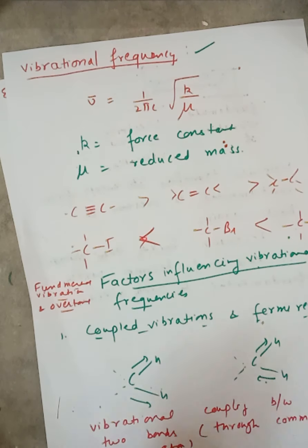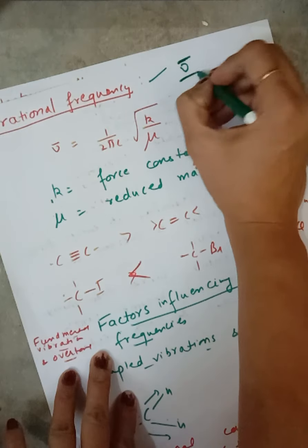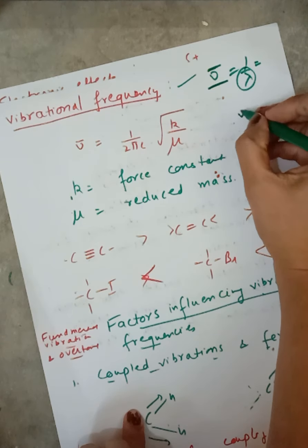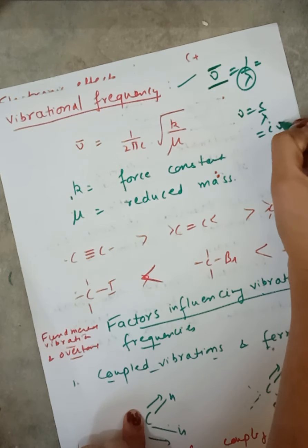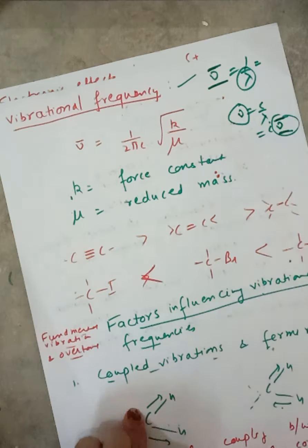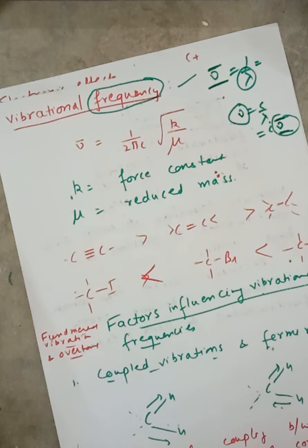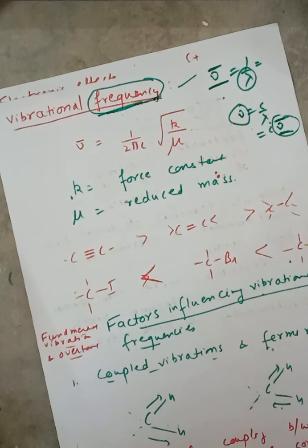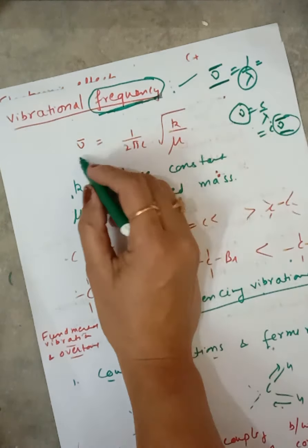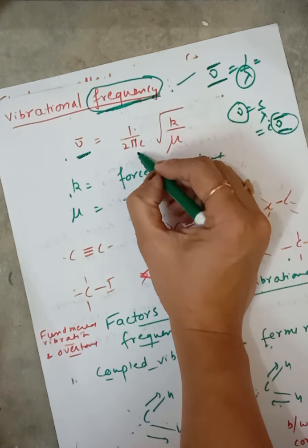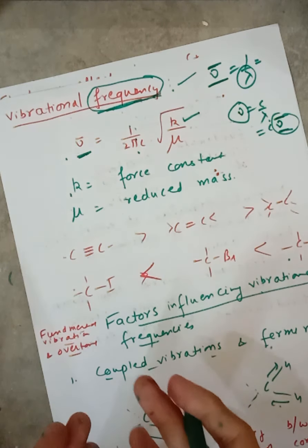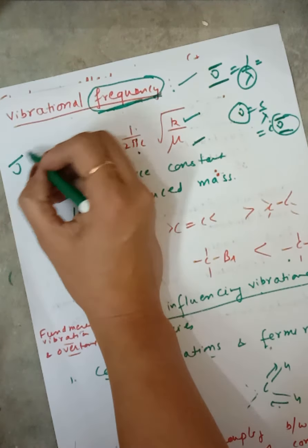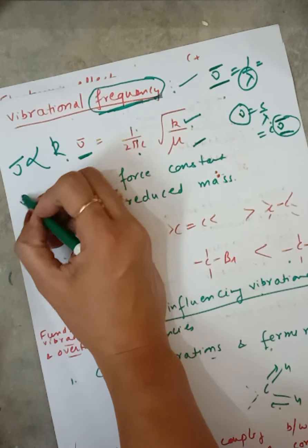Now coming to vibrational frequency. Although we take IR spectrum in terms of wave number, wave number is directly proportional to frequency, so we will use the term frequency. The vibrational frequency formula is: nu-bar equals 1 over 2πc times the square root of k over mu, where k is the force constant — the stronger the bond, the stronger the force constant — and mu is the reduced mass. Vibrational frequency is directly proportional to force constant and inversely proportional to reduced mass.